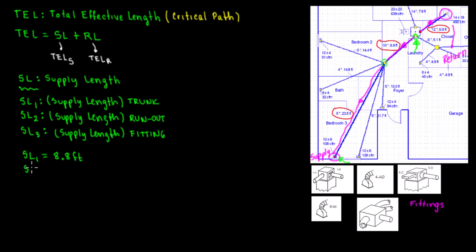Supply Length 2 — the run-out from the distribution box to the supply register — is going to be a total of 23.5 feet.